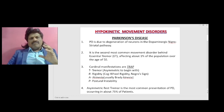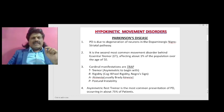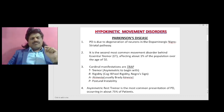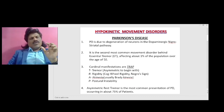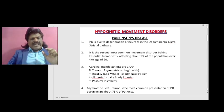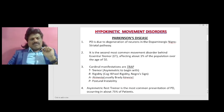The cardinal manifestations can be remembered with the acronym TRAP. T is for tremor — it is asymmetric to begin with. R is for rigidity, the cogwheel rigidity known as the Negro sign. A is for akinesia, usually bradykinesia. P is for postural instability.